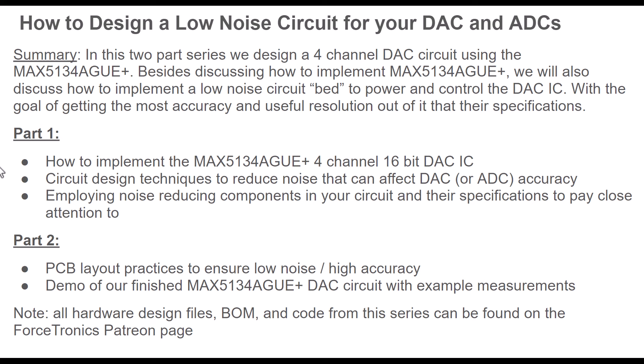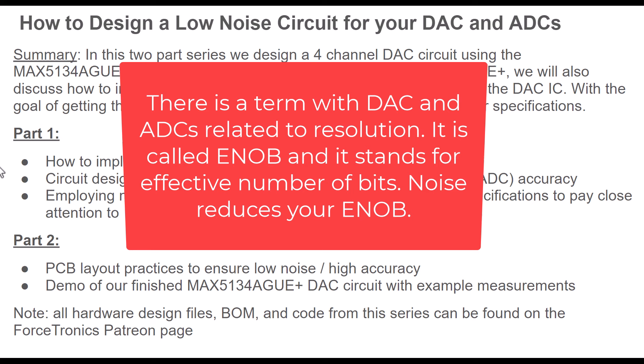Not only are we going to cover how to implement this MAX5134 DAC from Analog Devices into your circuit, but also how to create a low noise circuit bed that allows us to power and control the DAC without degrading its accuracy — because this DAC chip is not cheap. What's the point of buying a DAC with great specs, high resolution and good accuracy, if the circuit around it ruins that? When I use the term useful resolution, you can have as much resolution as you want in a chip, but if there's noise causing errors in your accuracy then that resolution really isn't useful. You can't change the fact that this is a 16-bit DAC, but if you have a noisy circuit you're not going to get useful information from those 16 bits.